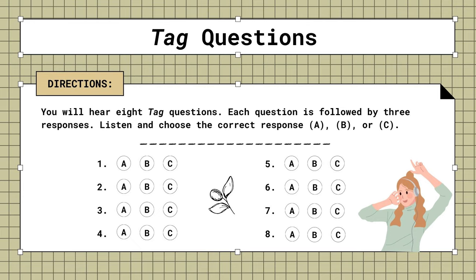4. You and Elizabeth work in the same department, don't you? A. I usually walk there. B. It's a very small compartment. C. Yes, we're in manufacturing.